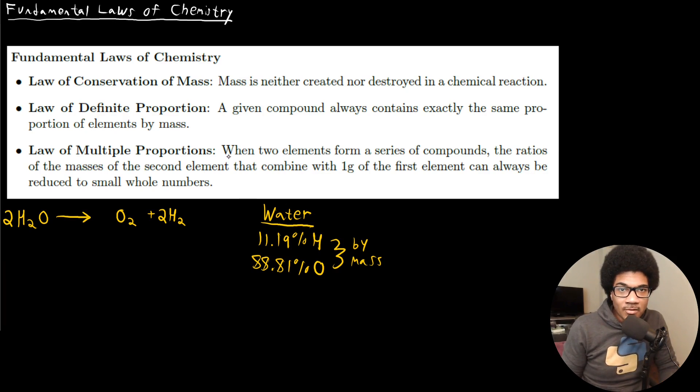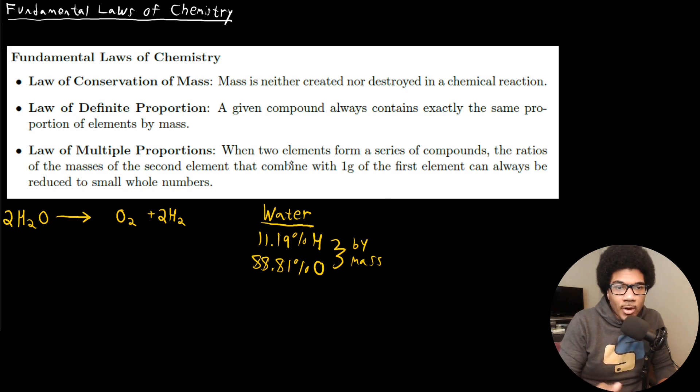The law of multiple proportions is the one that requires a bit more explanation. It says that when two elements form a series of compounds, the ratios of the masses of the second element that combine with one gram of the first element can always be reduced to small whole numbers. The most classic example is carbon interacting with oxygen. Carbon can form two different compounds with oxygen: it can form carbon monoxide, CO, or carbon dioxide, CO2.